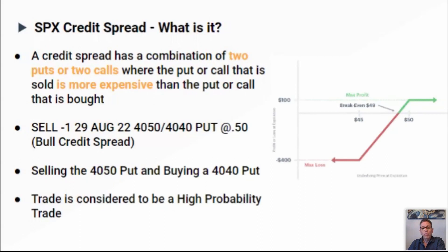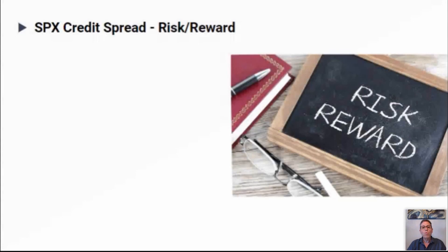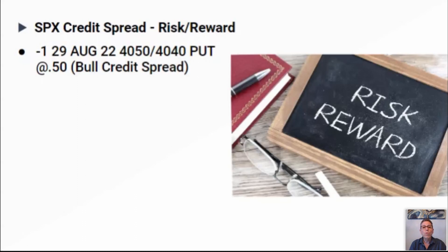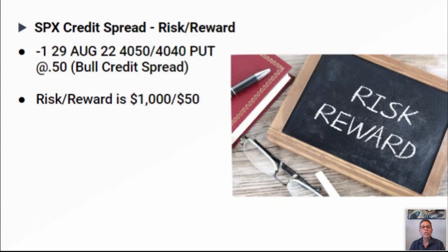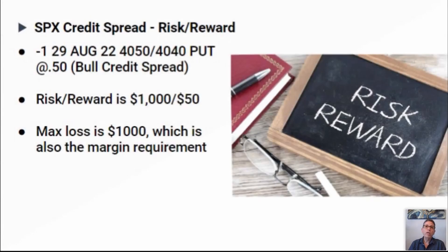There's another side to this: the risk/reward on a credit spread is probably one of the worst in the trading realm. You're collecting 50 cents — that's 50 times a hundred, which is $50. Your risk is basically $1,000 minus the $50 you bring in, so you're risking $950 to get a $50 reward. However, this is a high probability trade — 80 to 90% of your trading is going to be profitable. It's the risk management side that you need to worry about.